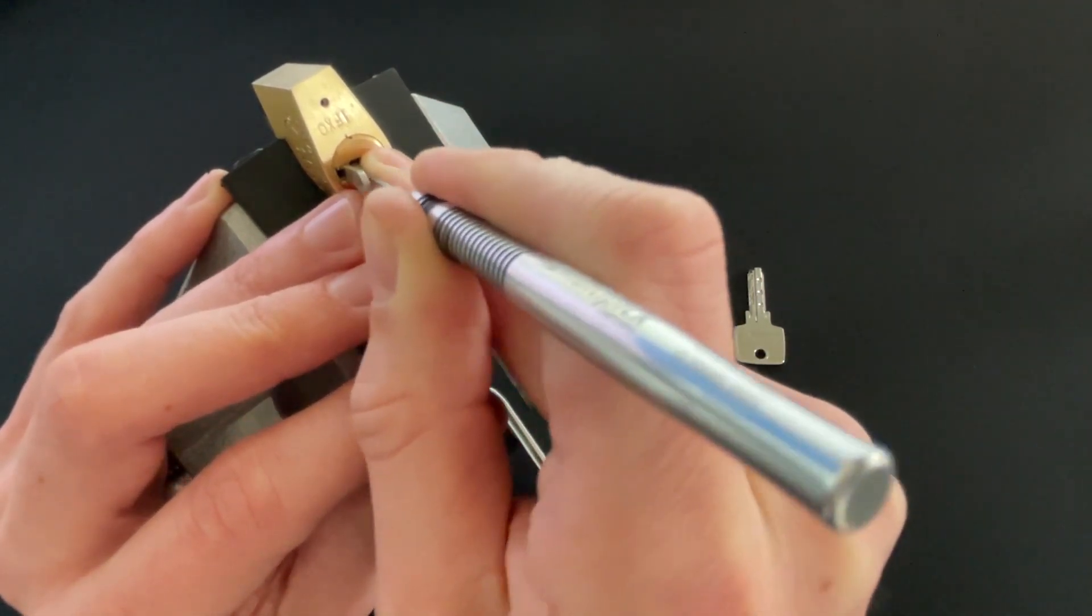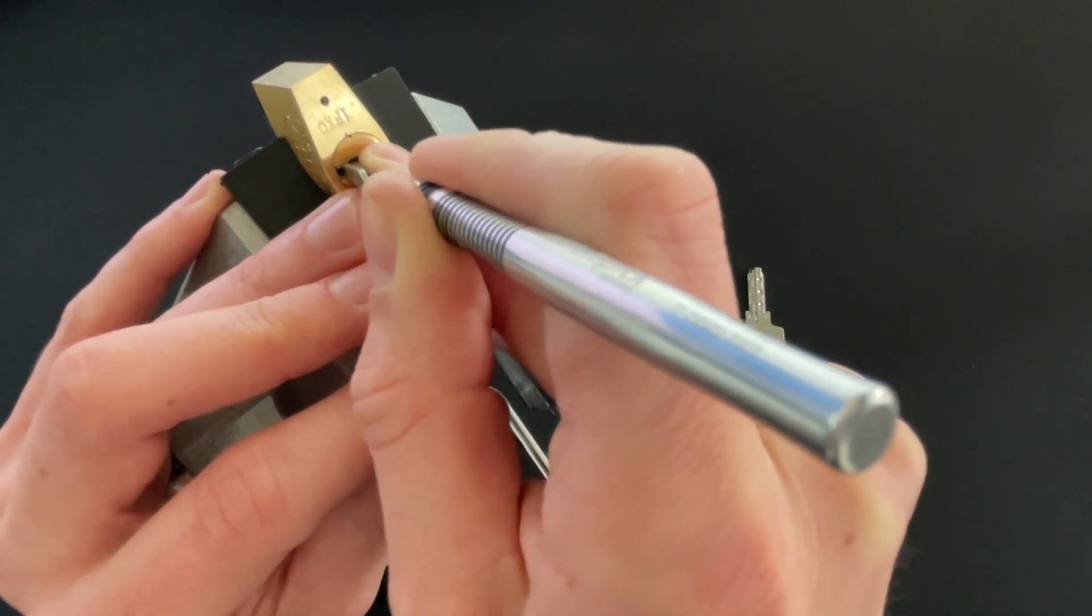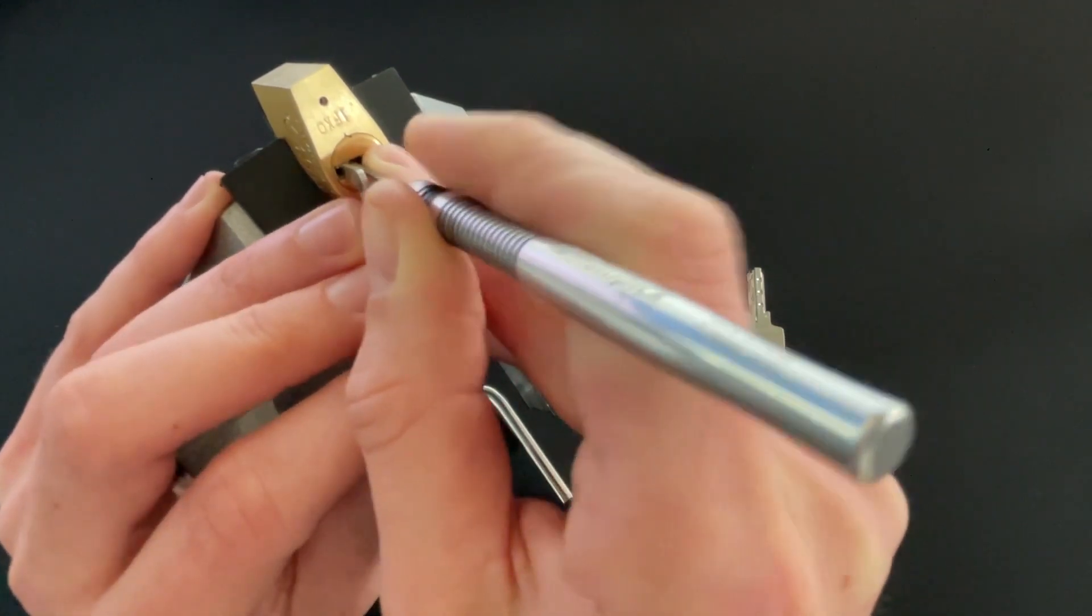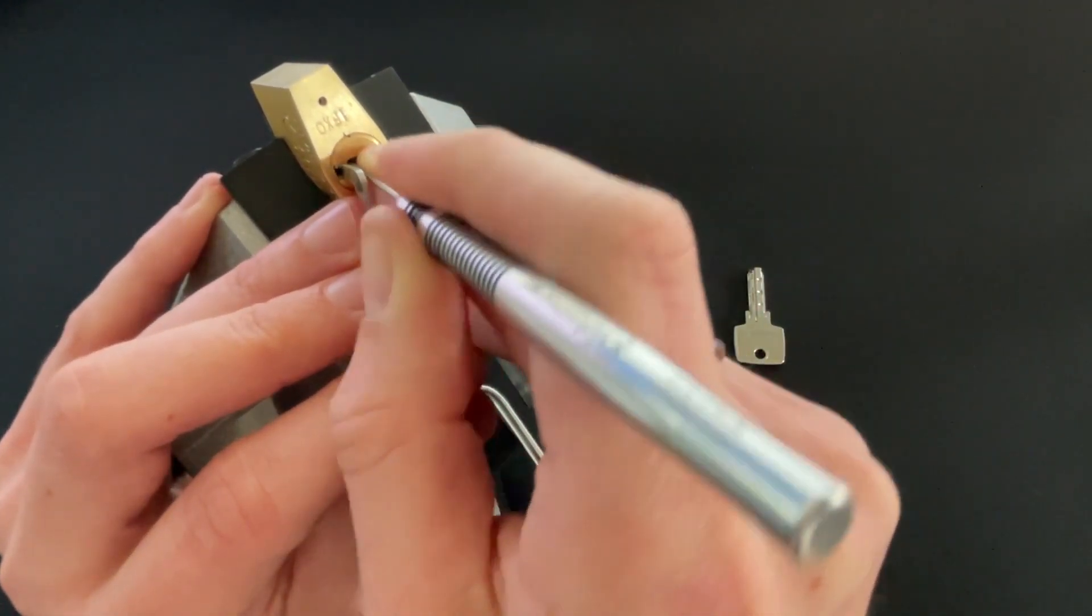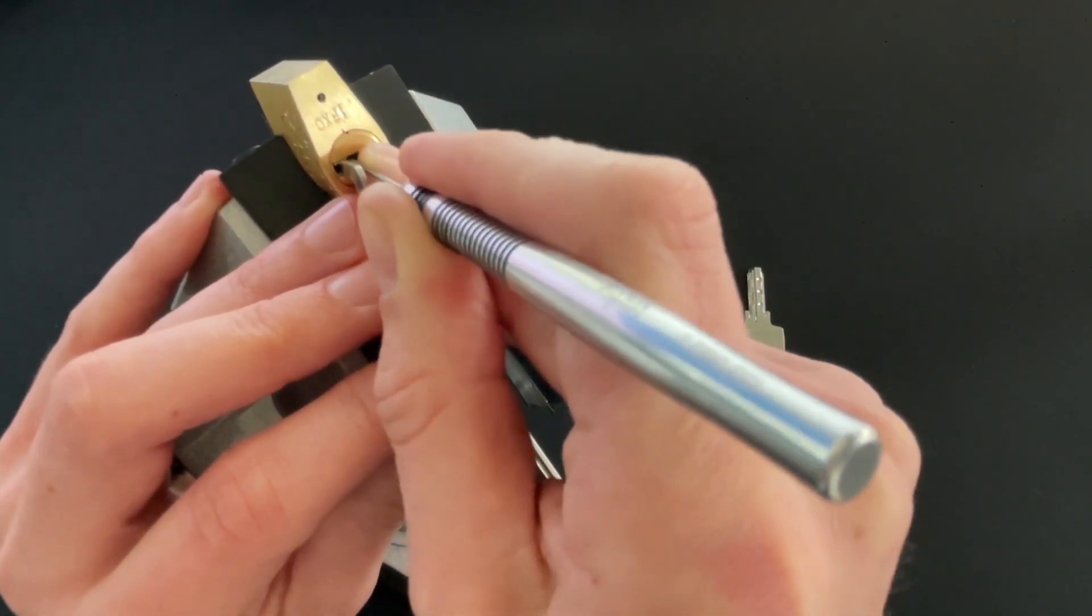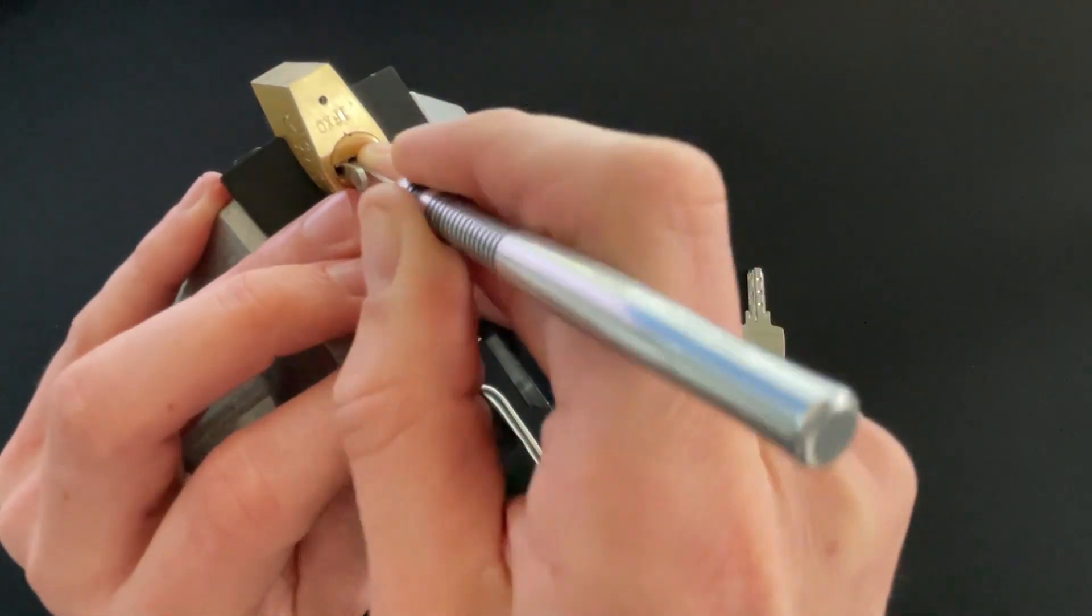I will do this rocking motion on the pin, while just ever so slightly turning the core with the tensioner until, yes, that's a little click out of one. Let's see two. Same technique, rocking motion, releasing tension, and we got two.